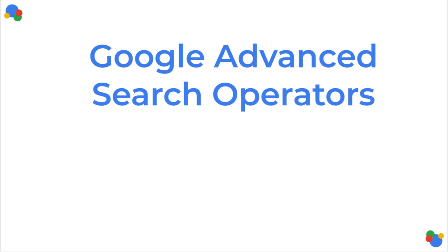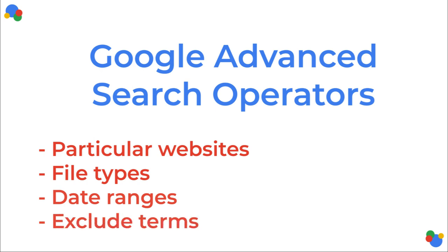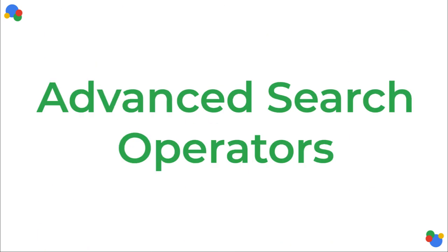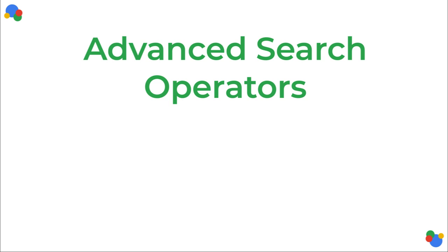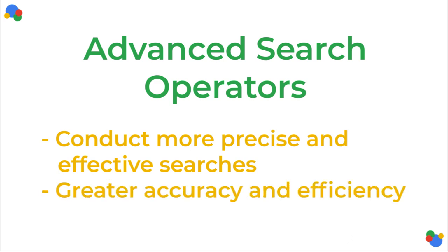They can be used to specify particular websites, file types, date ranges, or even to exclude certain terms from your results. In this video we'll explore a variety of the advanced search operators available to you and gain an understanding of how to use them. By the end of this tutorial you'll be able to conduct more precise and effective searches, enabling you to uncover the information you need with greater accuracy and efficiency.